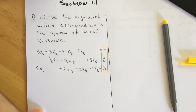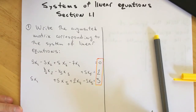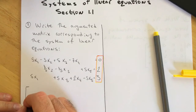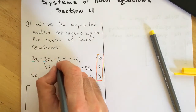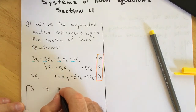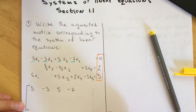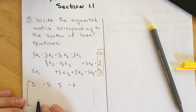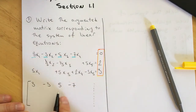It means including the constants at the end of the equation. The matrix is going to consist of what? Well, first we put the coefficients. The coefficients in the first equation are 3, negative 3, 5, and negative 7. Then we draw a vertical line which will differentiate between the coefficient matrix and the augmented matrix.